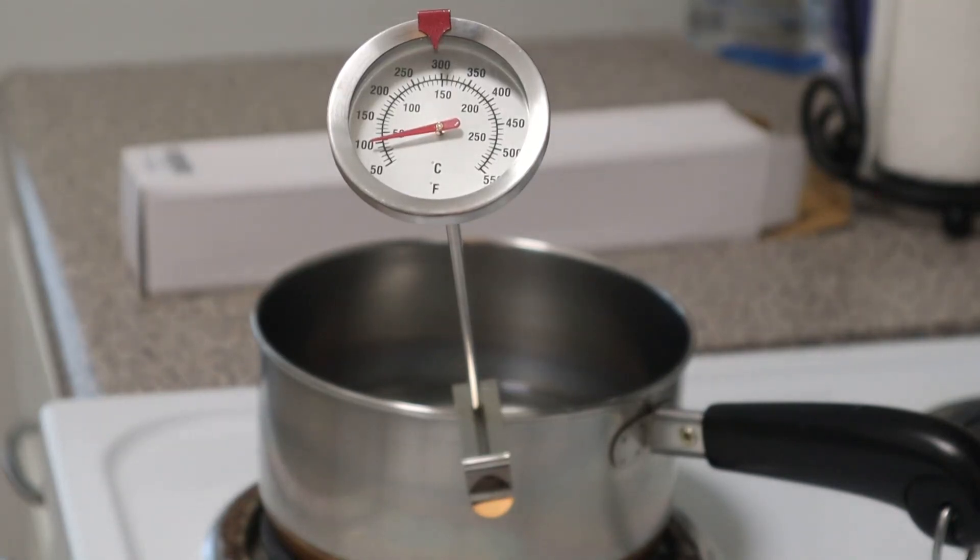Notice the clip that's set into the pot below the thermometer. You see a little clip on the pot. That's the clip on the pot for safety and the heat so it's far away.